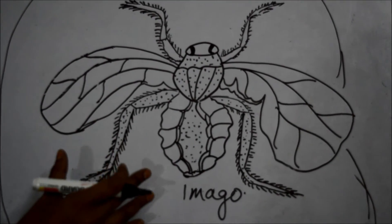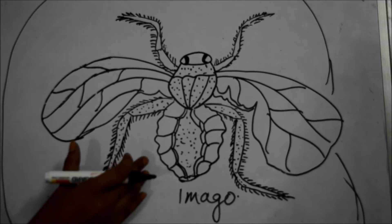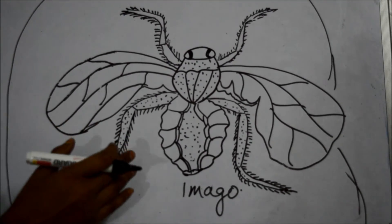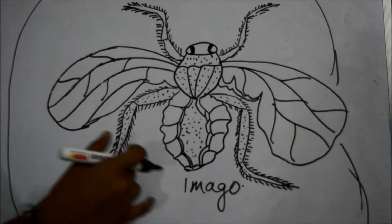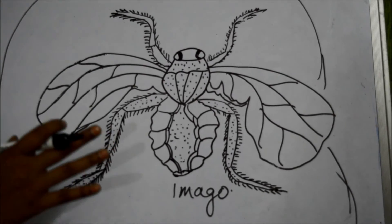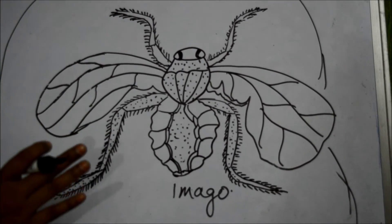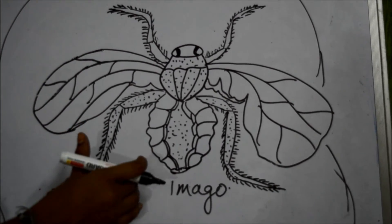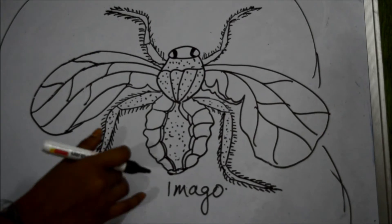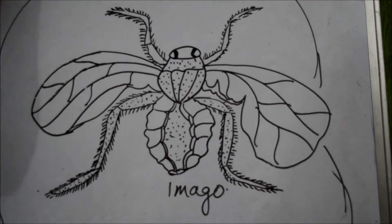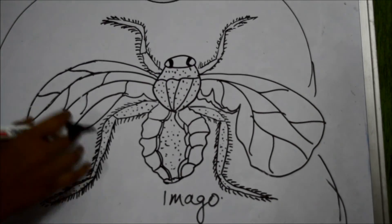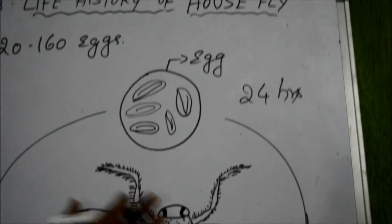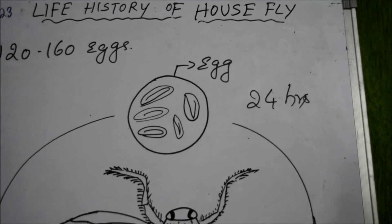Our food should be covered from houseflies. Our surroundings and house should be kept clean without garbage and dung heaps, because houseflies mainly lay eggs on garbage or dung heaps.